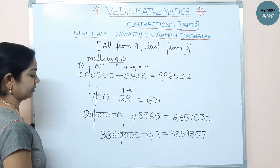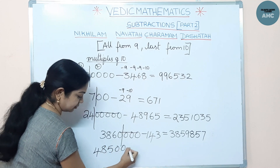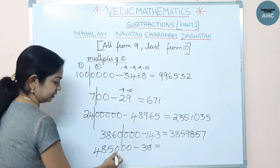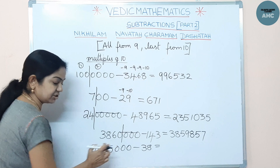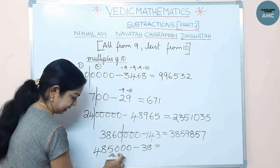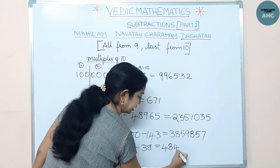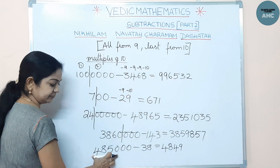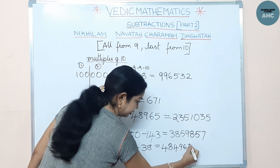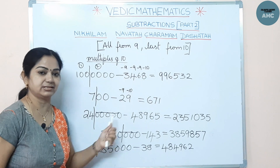Next example: 4,8500 minus 38. The subtrahend has two digits, so make the partition mentally after two digits. The first part 4850 is reduced by one to give 4849. Now from nine: 9-3=6, 10-8=2. The answer is 4849 | 62. You can do all of this mentally.